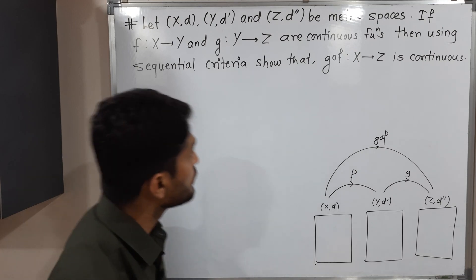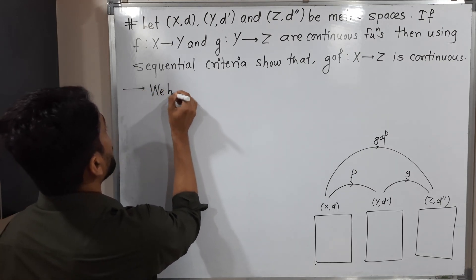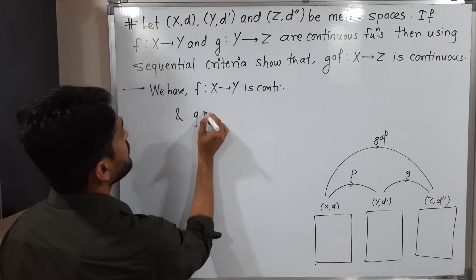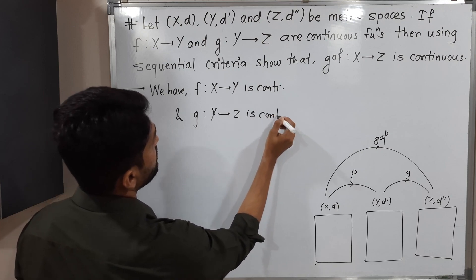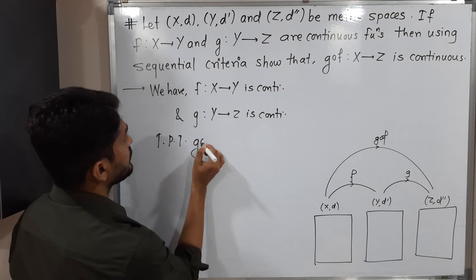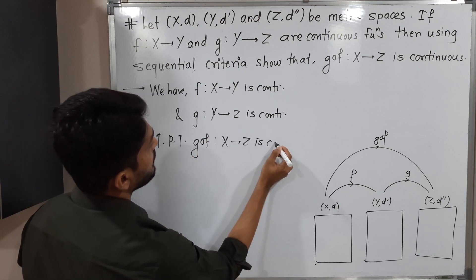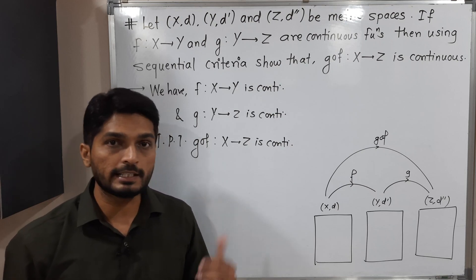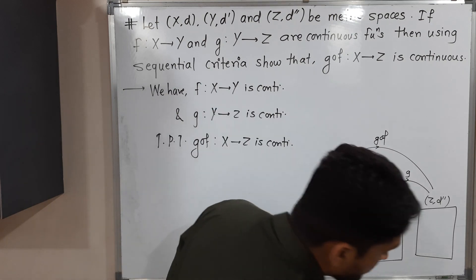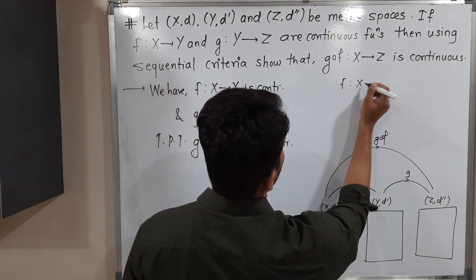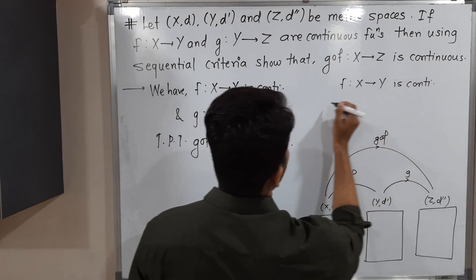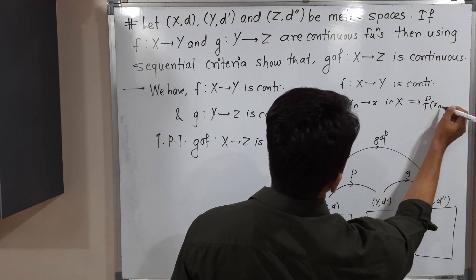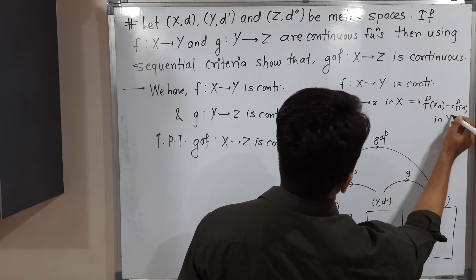They have added one condition: we have to prove this using sequential criteria. So let me write the given information. We have F from X to Y is a continuous function, and G from Y to Z is continuous. What we have to prove is that G composite F from X to Z is continuous. We have to use sequential criteria, so let us see what sequential criteria actually is. We have already proved that sequential criteria states: F from X to Y is continuous if and only if X_n converges to X in X implies F(X_n) converges to F(X) in Y.